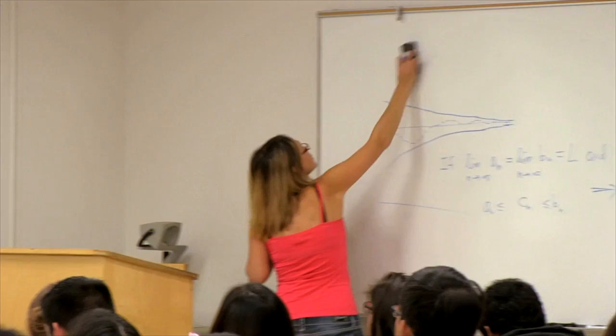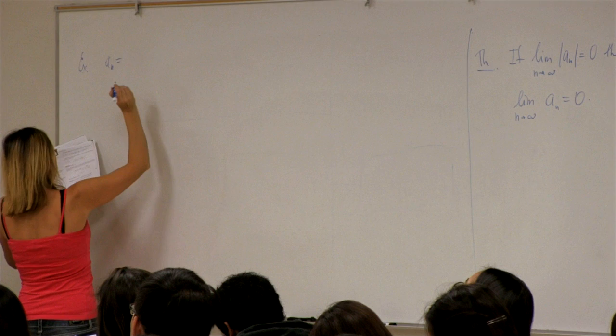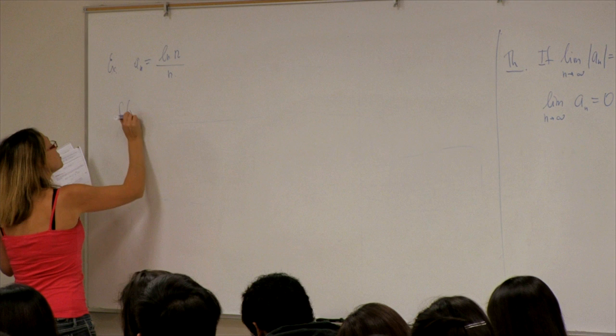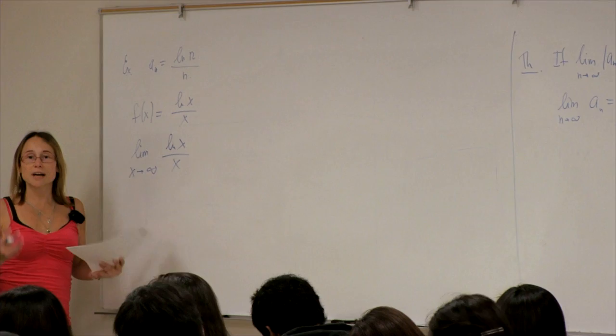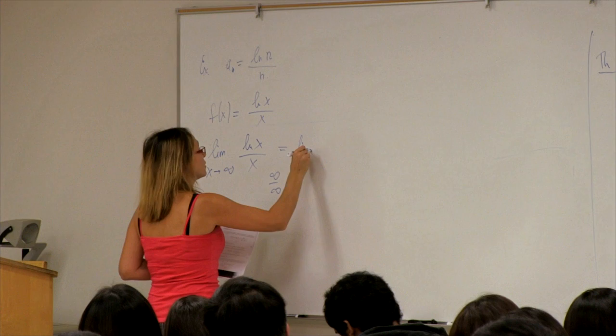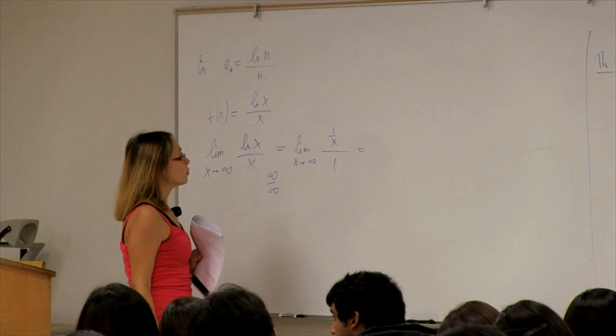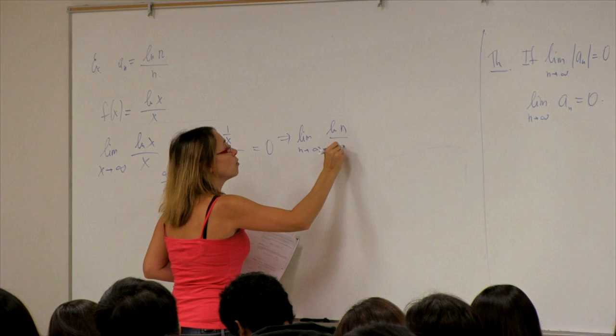Here's an example using L'Hôpital's rule. Let an = ln(n)/n. We consider f(x) = ln(x)/x. The limit as x→∞ is ∞/∞, so we take derivatives of numerator and denominator: derivative of ln(x) is 1/x, derivative of x is 1, giving lim = (1/x)/1 = 0. Therefore lim(n→∞) ln(n)/n = 0.